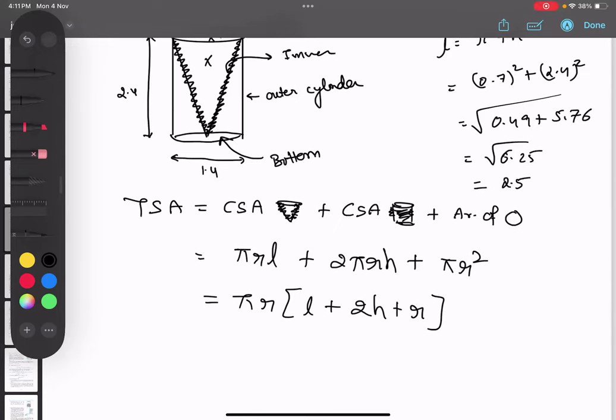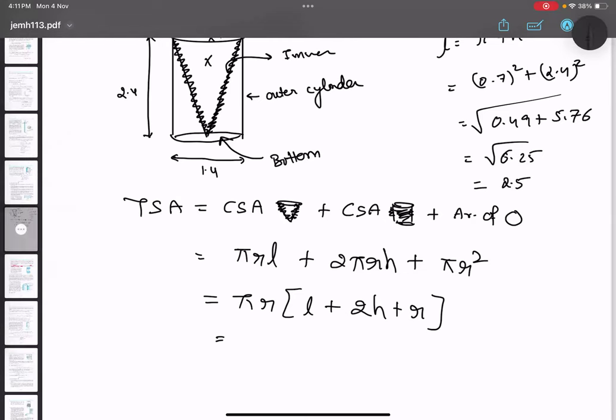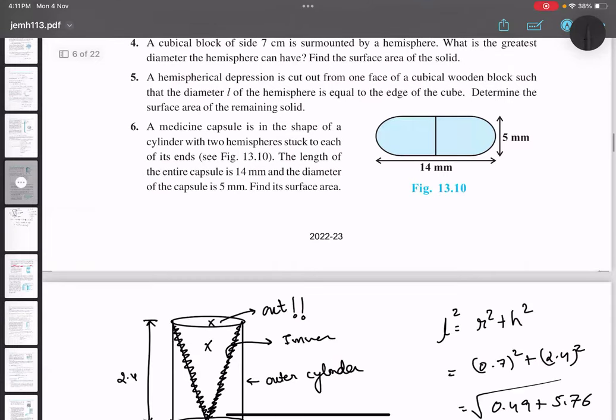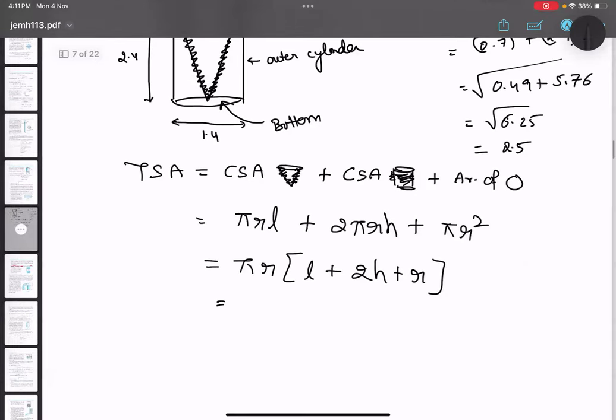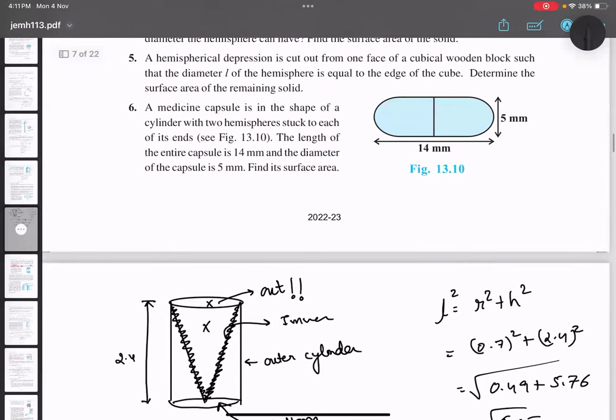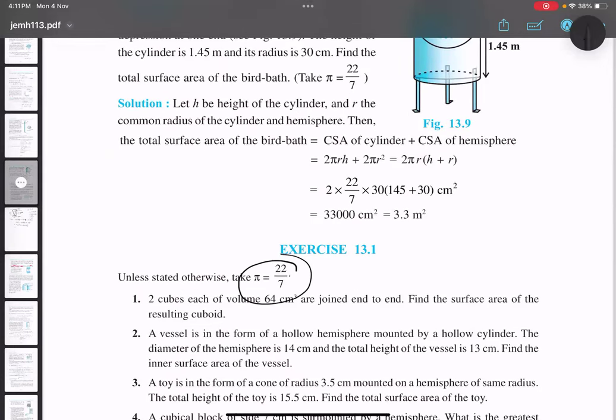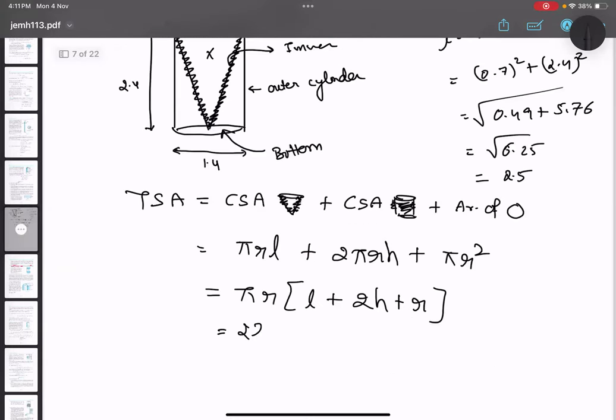Now please substitute and finish your question. I guess by value we have to take 22 by 7 if they have not mentioned anything. Yes. In the beginning of the question they have told us 22 by 7. Can you see that? Yes. Over here, 22 by 7. Radius 0.7. I would like to convert this into fraction. 0.7 means 7 upon 10. 2.5. Yes.